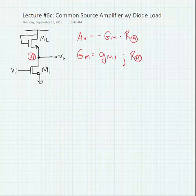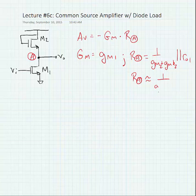The resistance seen at node A we showed in the prior set of slides is equal to 1 over GM plus GMB for transistor 2 in parallel with RO for transistor 1. Now the output resistance of the transistor should be significantly larger than 1 over the transconductance. So we can approximate RA as being just 1 over GM2 plus GMB2.